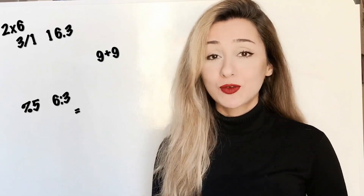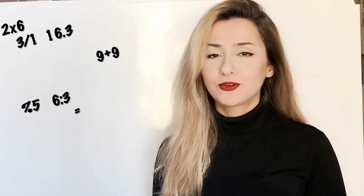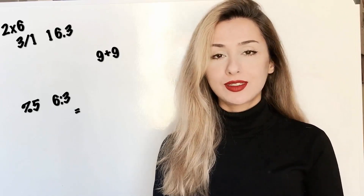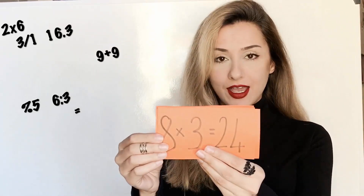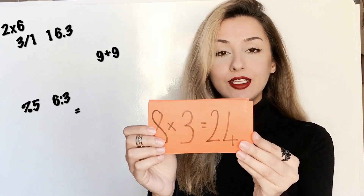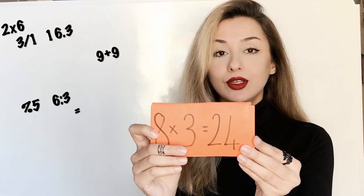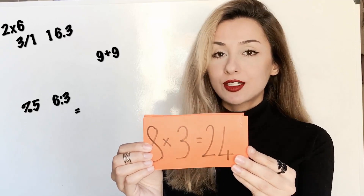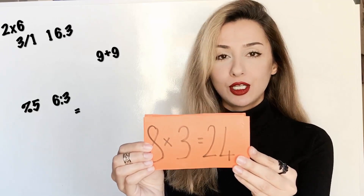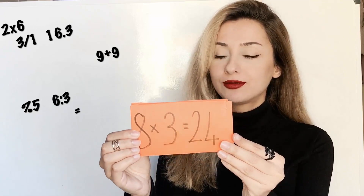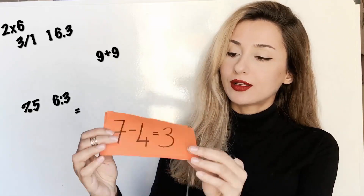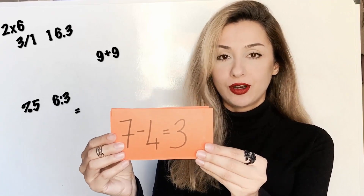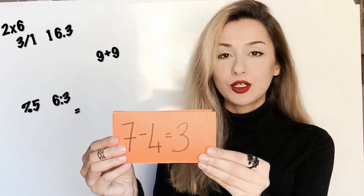Hello everyone, I'll show you some examples for four operations in math in this video. Let's start with eight times three equals twenty-four. The next one: seven minus four equals three.